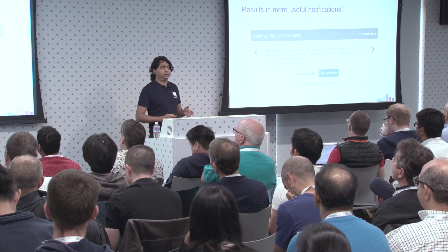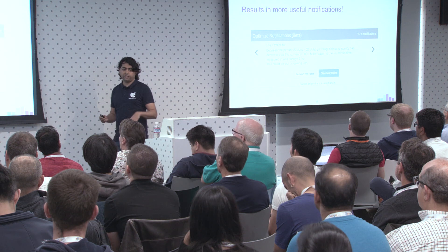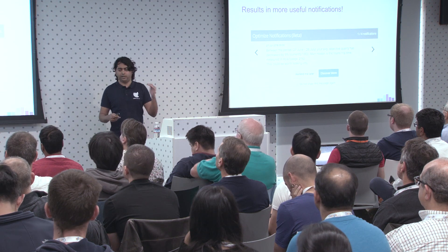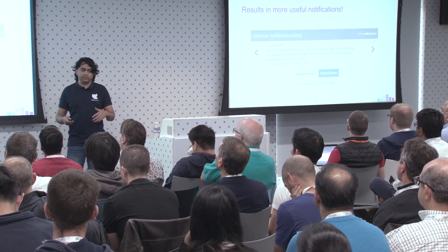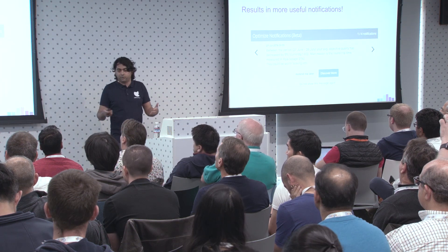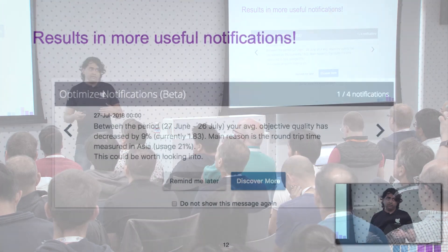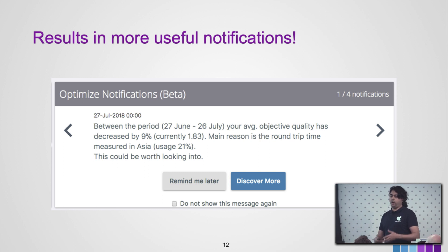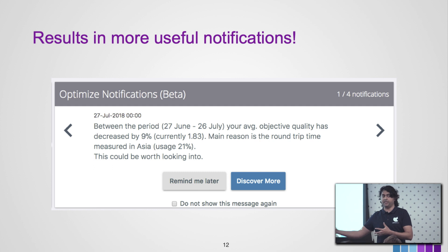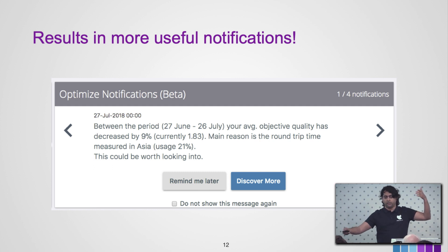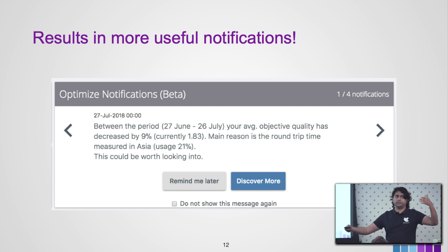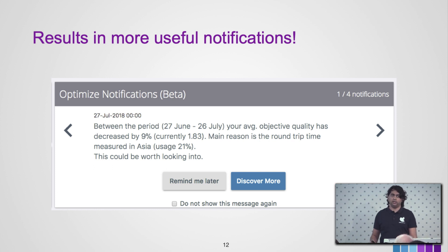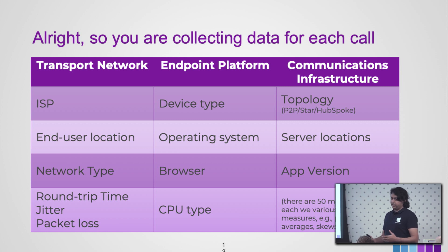What we wanted out of it was more interesting notifications. We did not want to just set an alarm like, 'send me an alarm when call failure rate hits 2%,' because you don't know why it's failing — maybe the browser version changed or you rolled out an app. So we wanted to get to a point where the alarms would actually be much more insightful, where they would say, 'this is happening because of this, and these are the other things being affected.' For example, round trip time is reducing the quality of end users in the call, and it's only happening in this region.